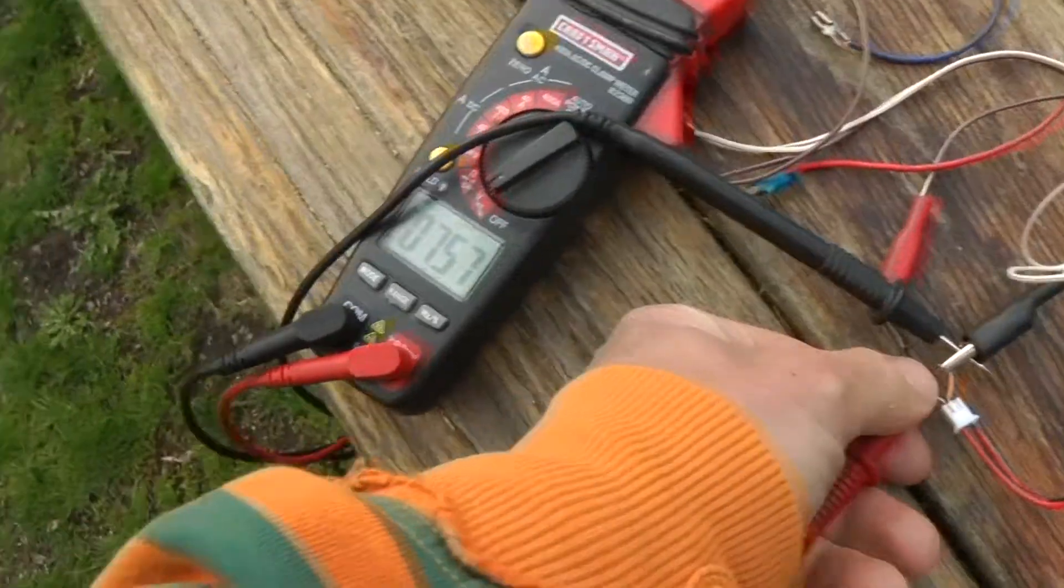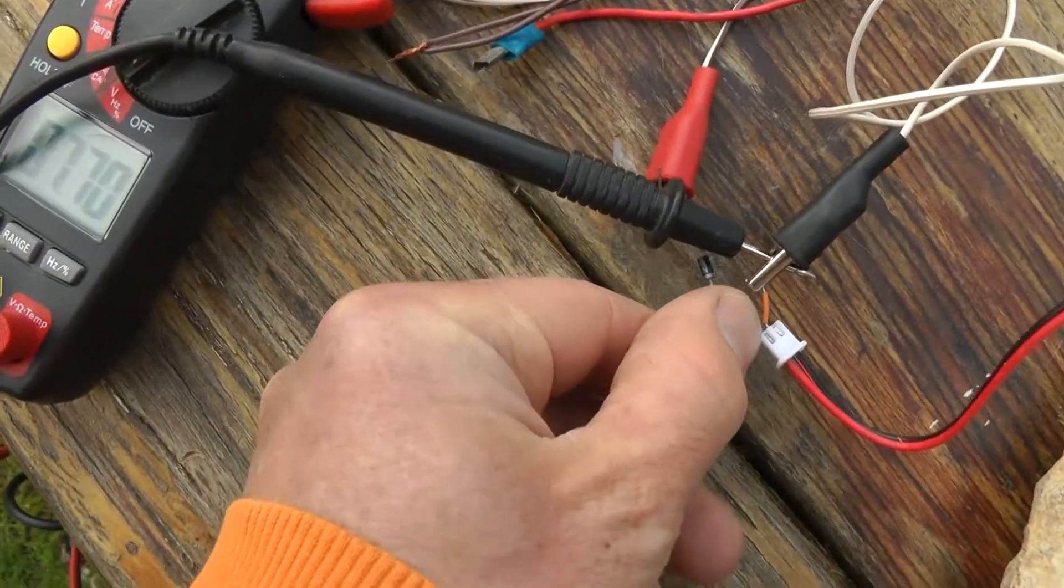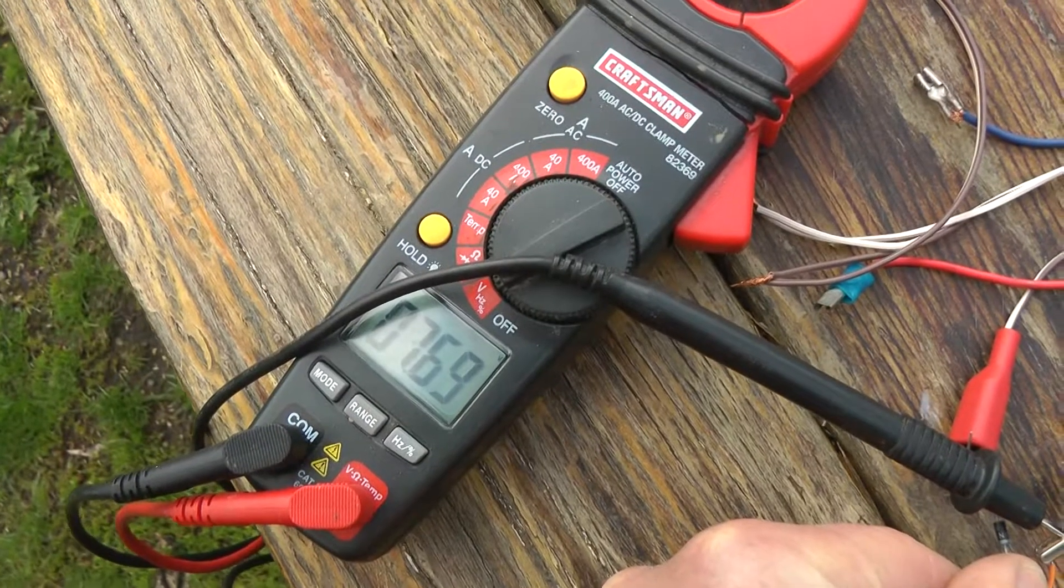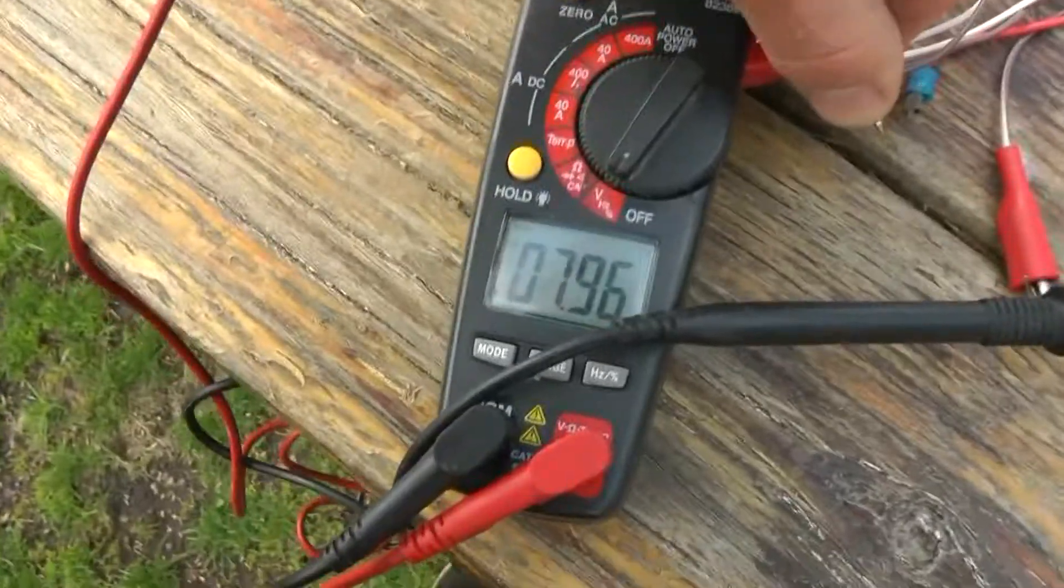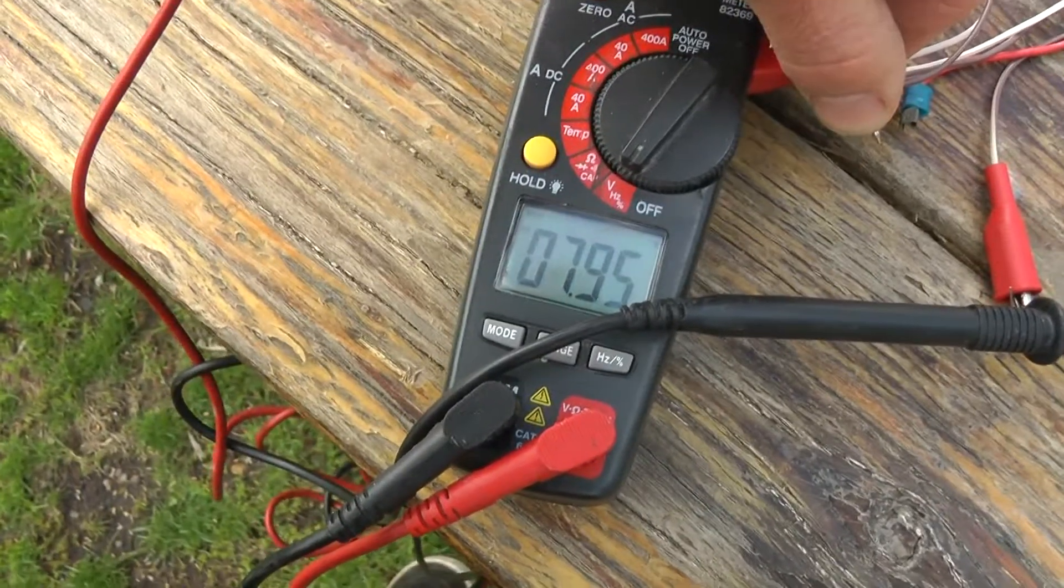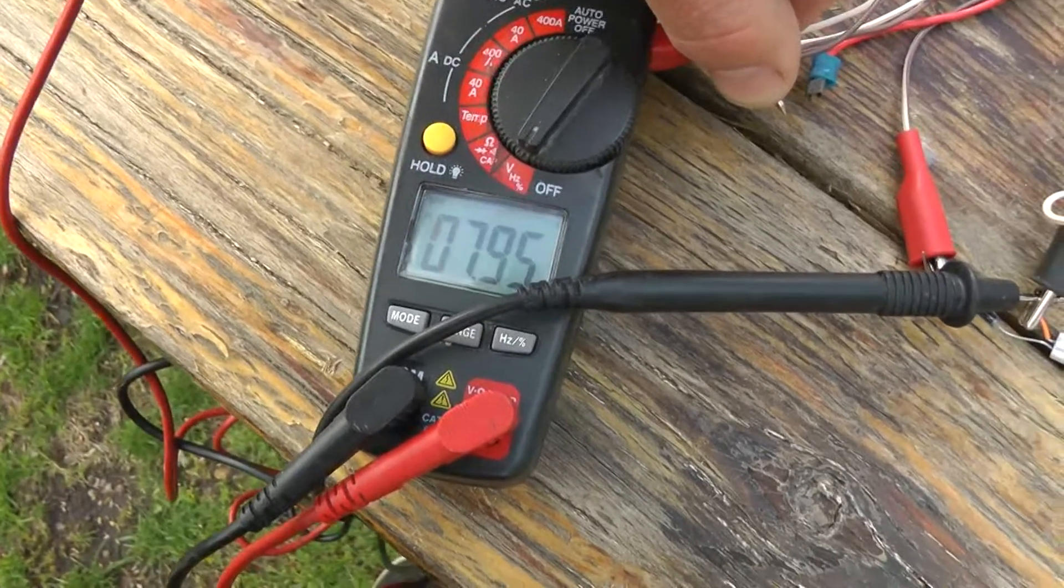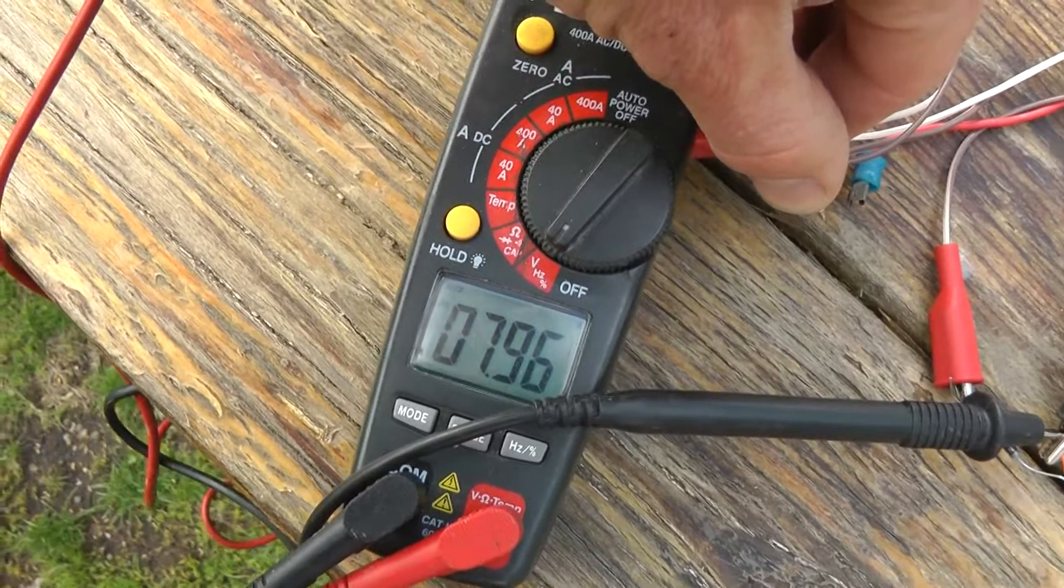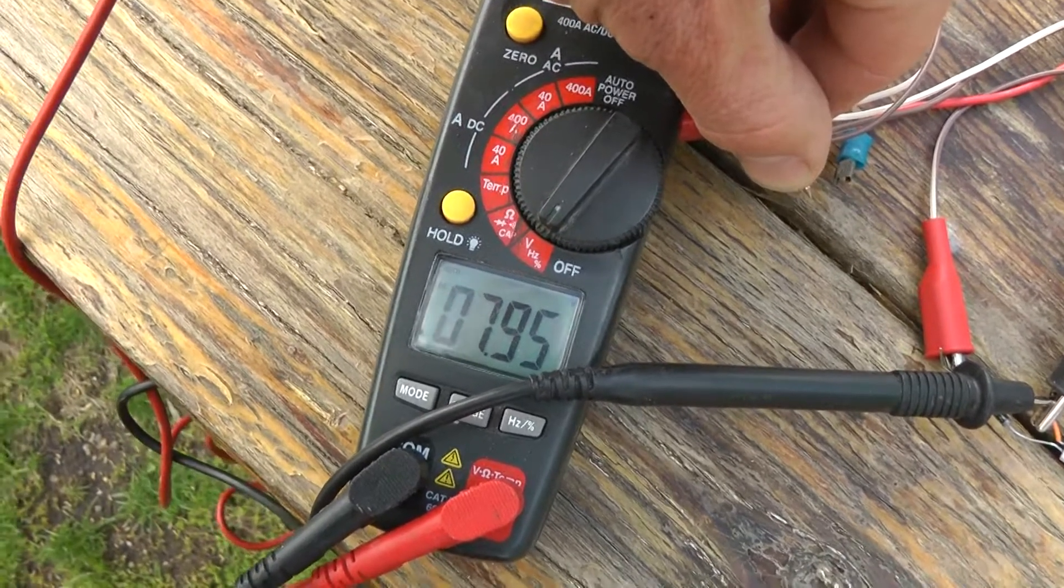All right, so right now the battery, if I put it downstream of the diode, we're getting 7.69 volts. Upstream of the diode, or downstream, whatever, on the solar panel side of the diode, I'm getting 7.95 volts.